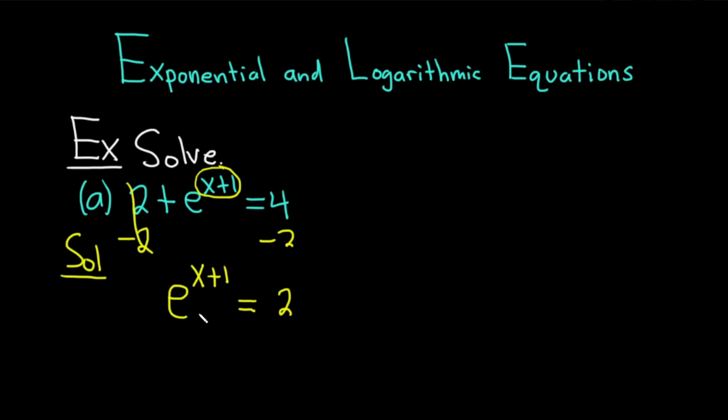In order to get rid of the e, what we're going to do is take the natural log of both sides. I'm going to put a natural log here, and we have e to the x plus 1, and that's equal to the natural log of 2. The reason we're doing this is because there is a super powerful formula that says if you have the natural log of e to the x, that's equal to x. This is extremely useful.